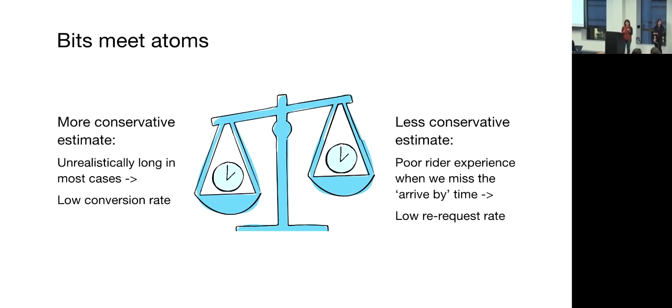One important consideration for us here is which percentile of the time do we want to present to riders. If we show a more conservative estimate, it's unrealistically long in most cases, but if you show something that is less conservative, this leads to poor rider experience when we miss the arrive-by time, so riders are unlikely to request again.